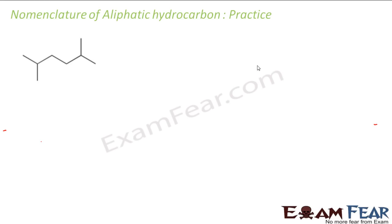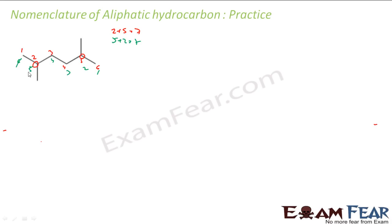Let's practice some more nomenclature of aliphatic hydrocarbons. Let's try to name this first compound. Numbering 1, 2, 3, 4, 5, 6: the methyl groups are at positions 2 and 5, sum = 7. Numbering in reverse 1, 2, 3, 4, 5, 6: also gives 5+2 = 7. Since they are the same, I will take the red numbering. At positions 2 and 5 I have methyl groups — so 2,5-dimethyl. There are 6 carbons so HEX, all single bonds so HEXANE. The name is 2,5-dimethylhexane.